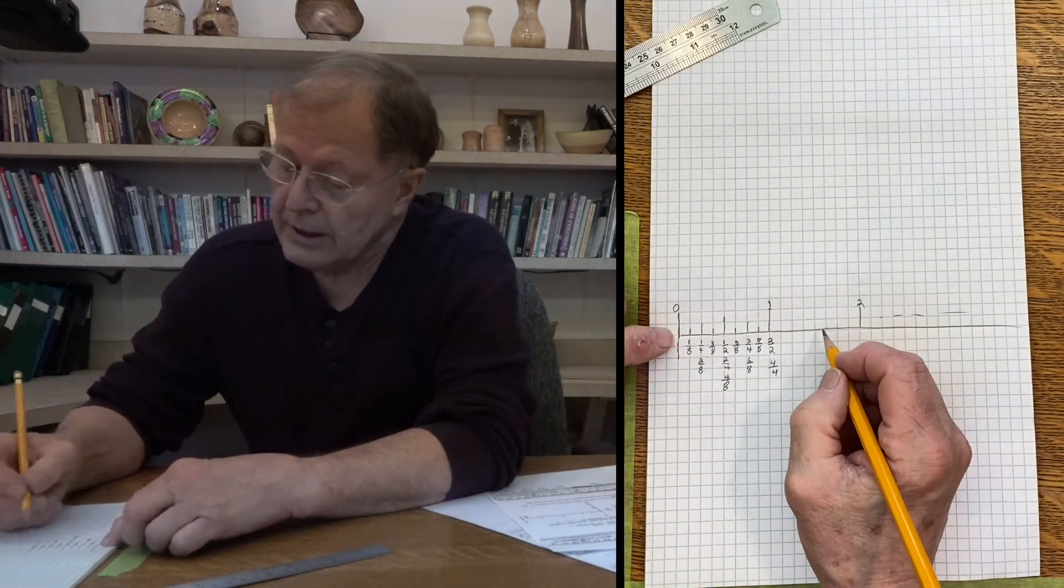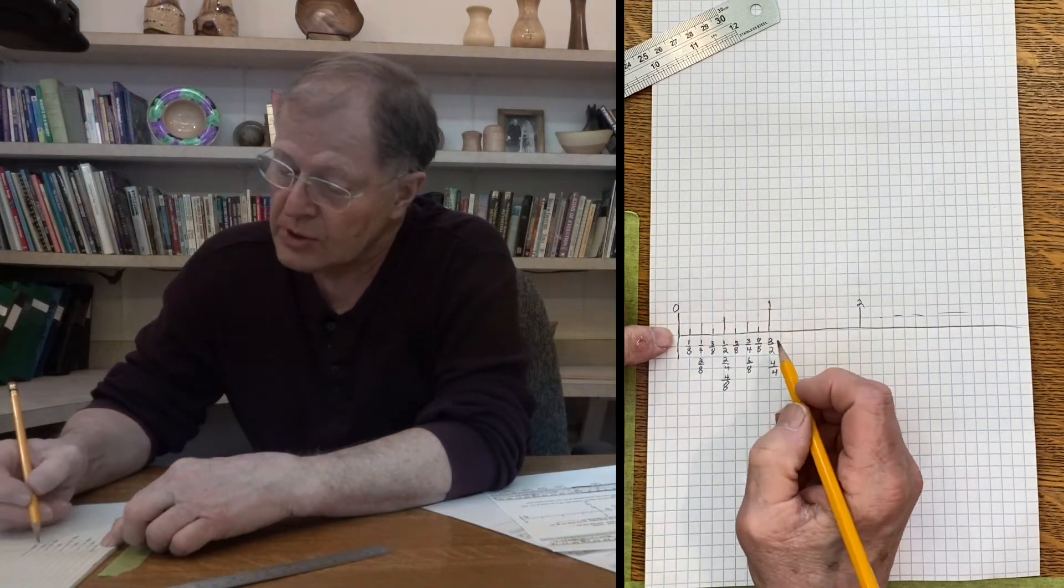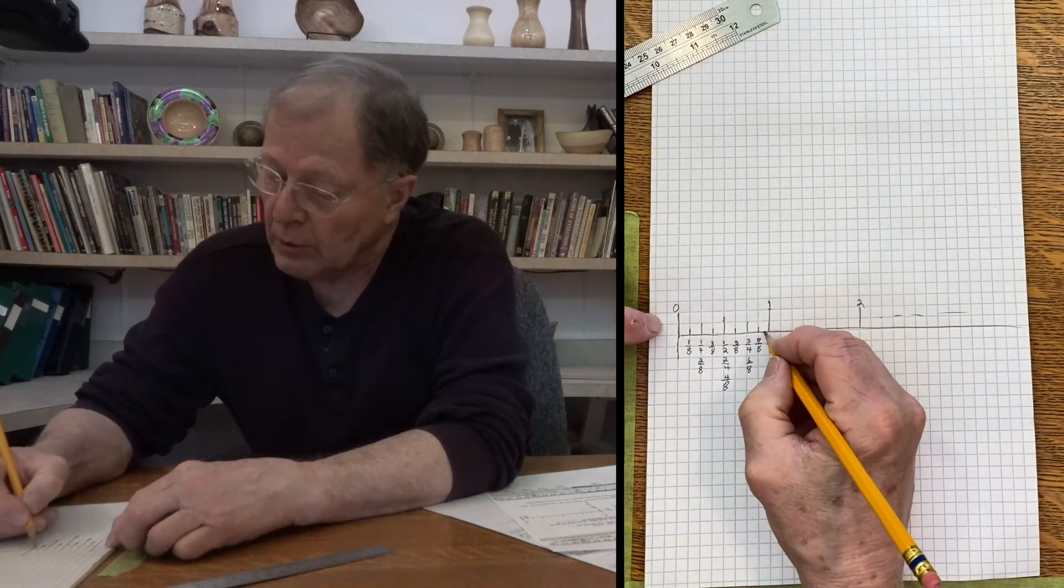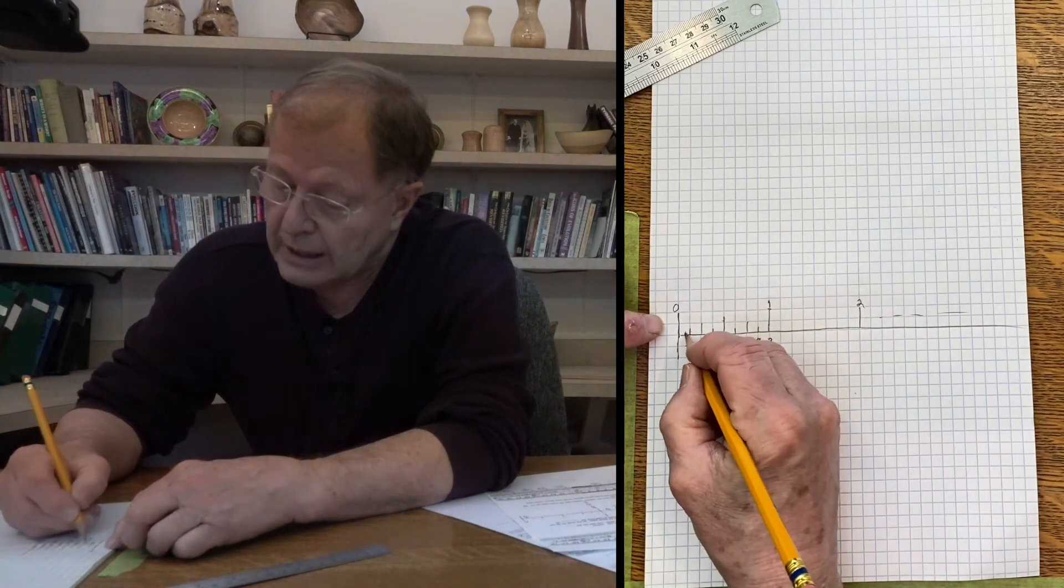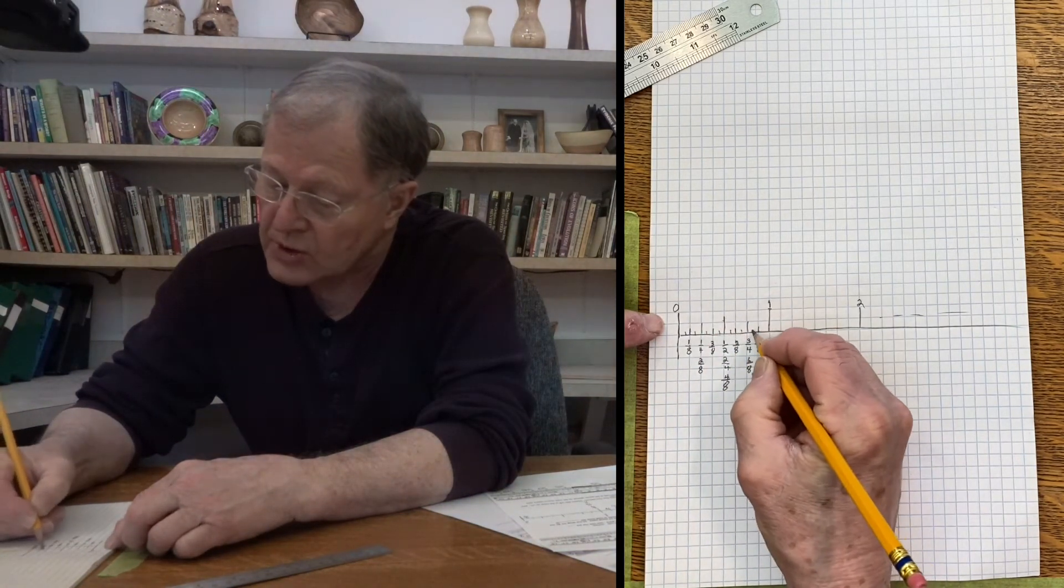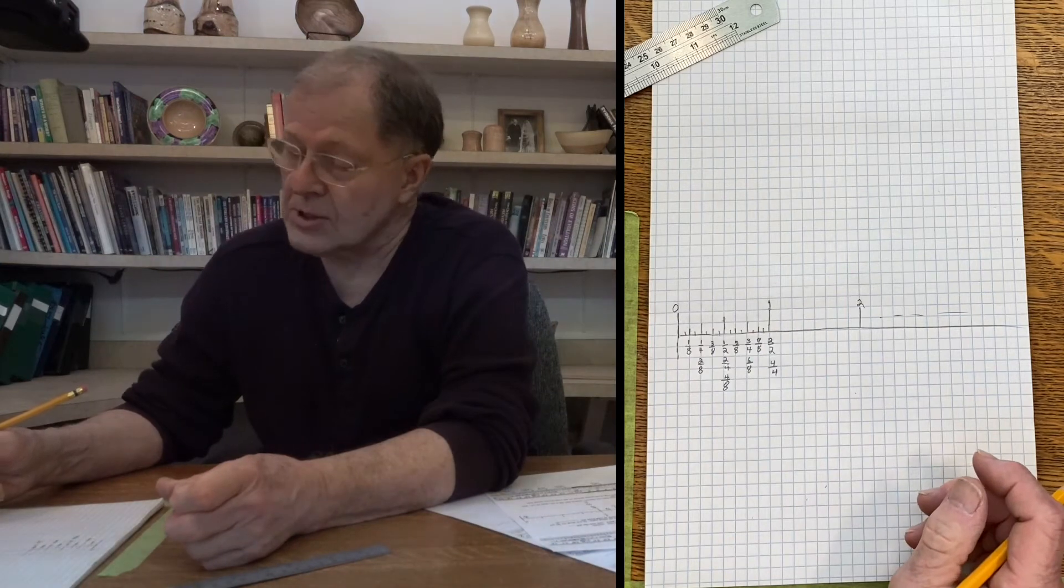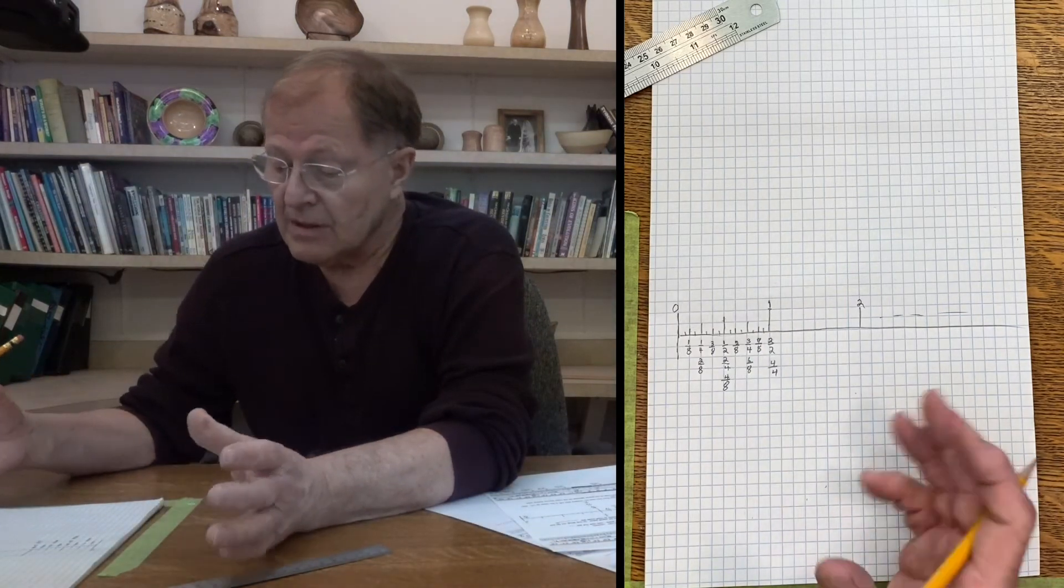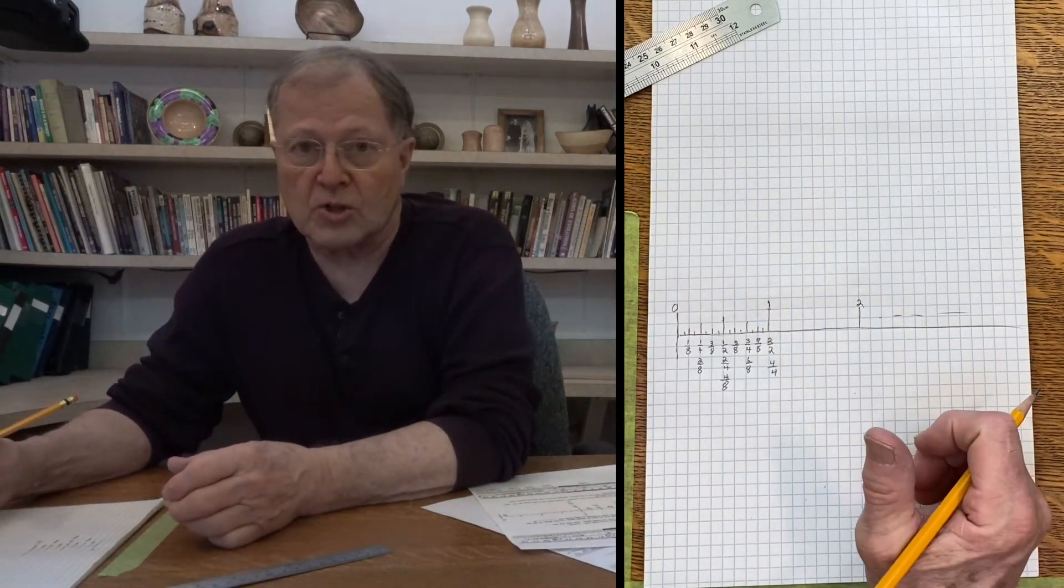So I've shown you what the inch looks like, right? Halves, quarters, eighths. And I'm not going to write the numbers down, but if you break each of those eighths in half again, you will have a total of 16 little pieces in the inch. So that's the way each of the inches is divided.